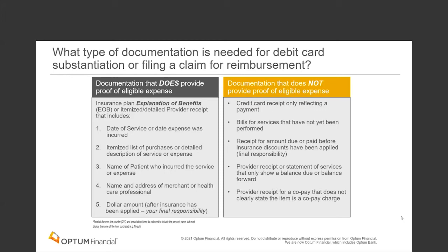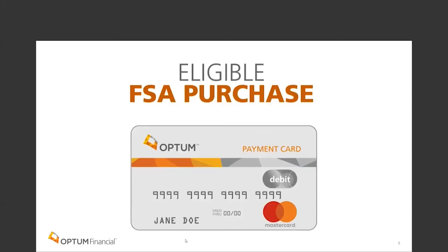When submitting a receipt for a copayment amount, be sure the copayment description is clearly on the receipt. In some cases, you'll need to ask for a receipt at the point of service. If copayment isn't clearly identified, ask the provider to write 'copayment' on the receipt and sign it — that will pass for your copayment amount. When using your Optum MasterCard, save those receipts in case you need to provide substantiation.